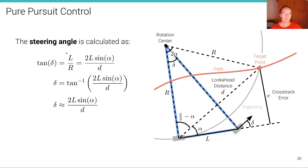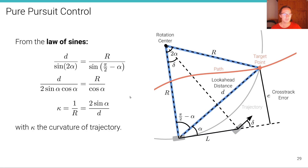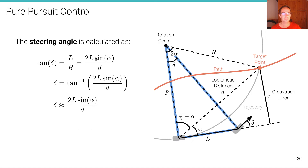Now the steering angle is calculated from tan(delta) = L/r, similar to the kinematic bicycle model. Since we've defined 1/r = 2*sin(alpha)/D, we can substitute to get tan(delta) = 2*L*sin(alpha) / D. In other words, delta = arctan(2*L*sin(alpha) / D). If we assume the steering angle is small, then the tangent is approximately linear, so delta ≈ 2*L*sin(alpha) / D.